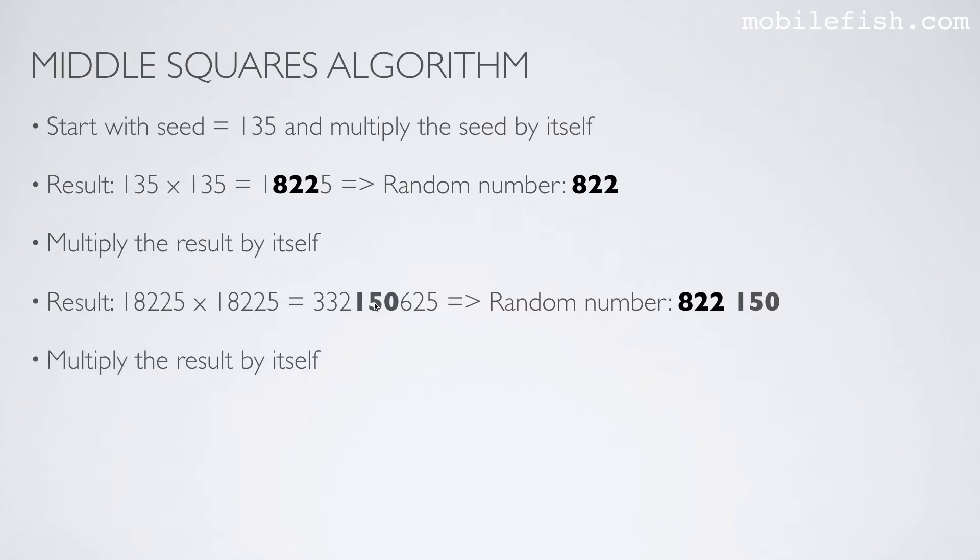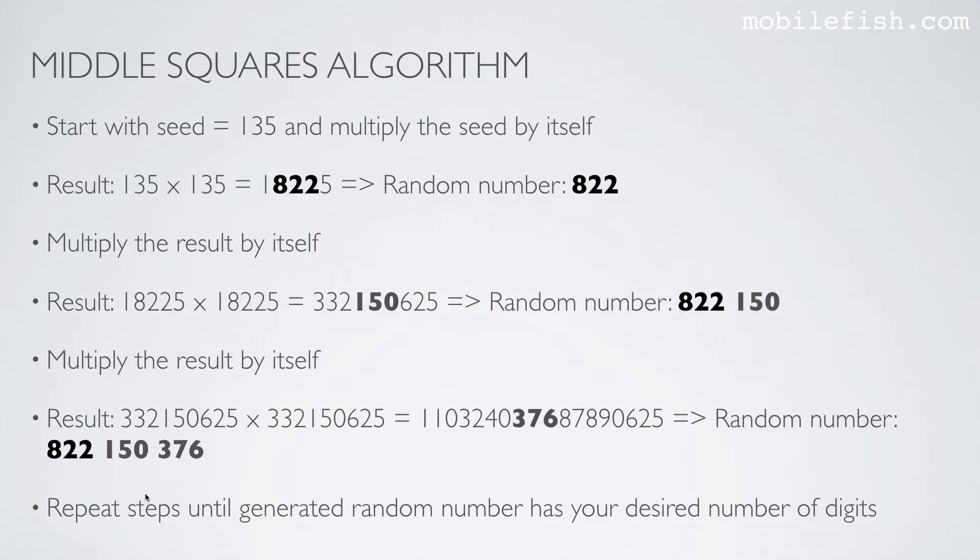Again, you take this result and multiply by itself as you can see over here. This is the result. Again, you take the middle part and append it to the previous random number. You repeat the steps until the generated random number has your desired number of digits.